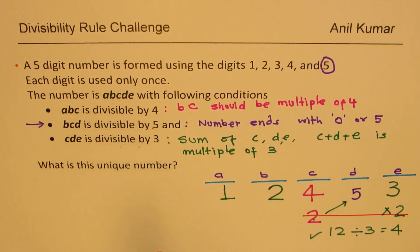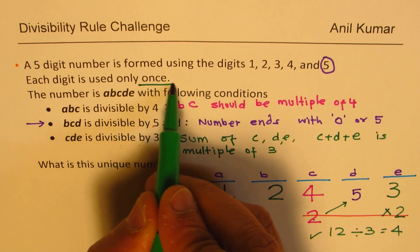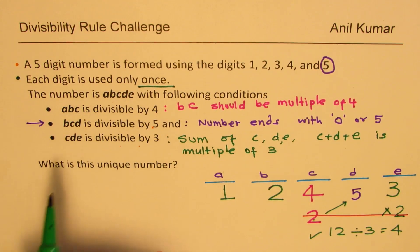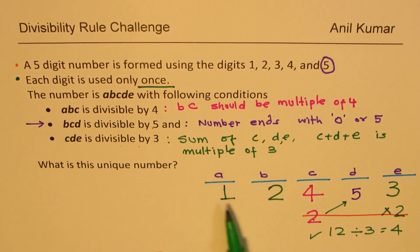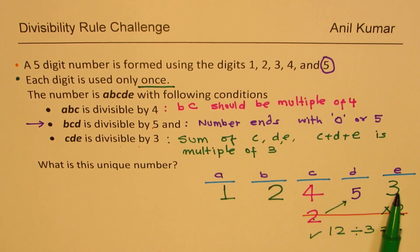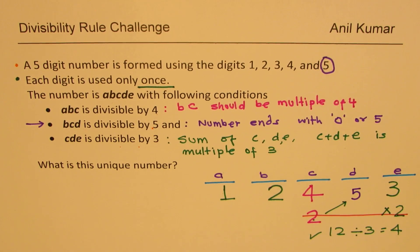All the digits have been used just once. You can check that 124 is divisible by 4, 245 is divisible by 5, and 453 can be divided by 3. That is how we could solve this particular question.